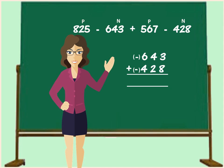Here, when you add minus 643 and minus 428, their sum will be minus 1071.